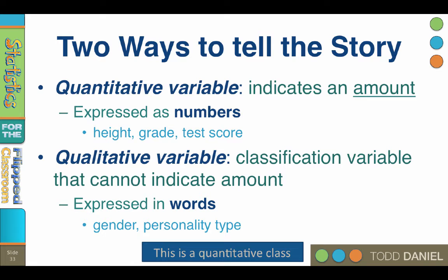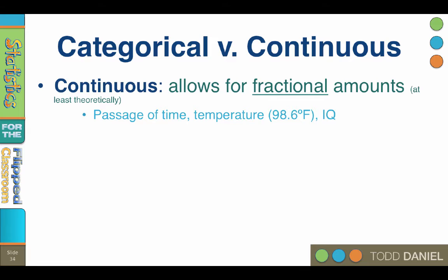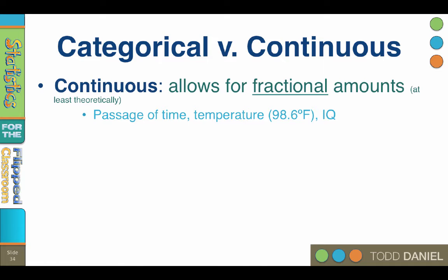Another way to describe variables is as categorical versus continuous variables. A continuous variable allows for fractional amounts, or at least theoretically. Continuous variables would be scale variables, interval or ratio level data, such as the passage of time, 6.4435 years, or temperature, 98.6 degrees Fahrenheit, or IQ. Even though you can't get a 98.6 IQ, meaning that technically it is a discrete variable, theoretically IQ is still continuous.